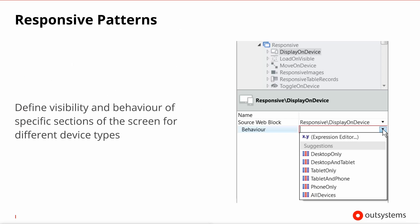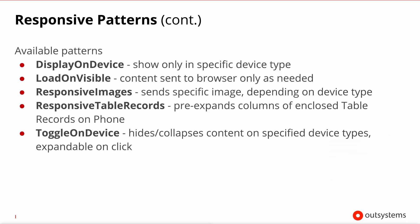There are also responsive patterns that define the visibility and behavior of certain panels and areas of the screen for different device types. In the example shown on the right, you can state that a certain area will be displayed on desktop only, on desktop and tablet, and so on. This is just one of the responsive patterns available. You can opt to load certain areas only when they become visible, select a specific image depending on the device type, force table records to pre-expand certain sections if accessed on the phone, and also opt to have sections pre-collapsed or expanded depending on the device.